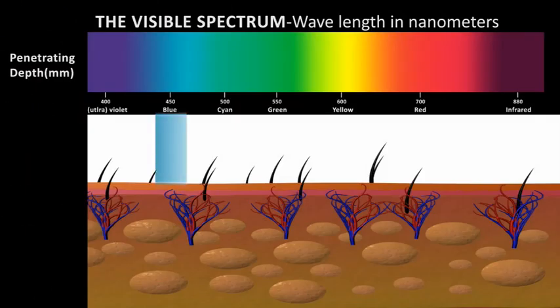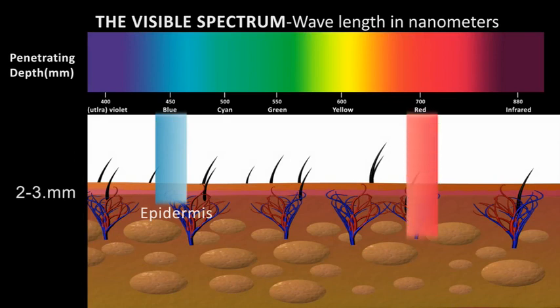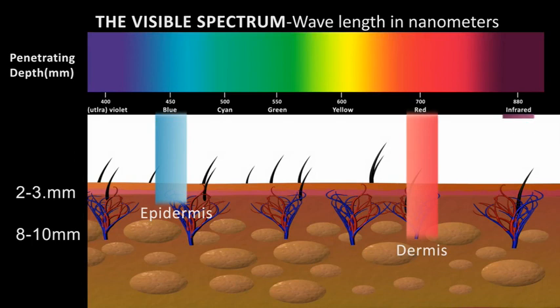Light near the blue end of the spectrum penetrates about 2 to 3 millimeters. Light at the red end of the spectrum penetrates about 8 to 10 millimeters. And near-infrared light penetrates about 20 to 100 millimeters.